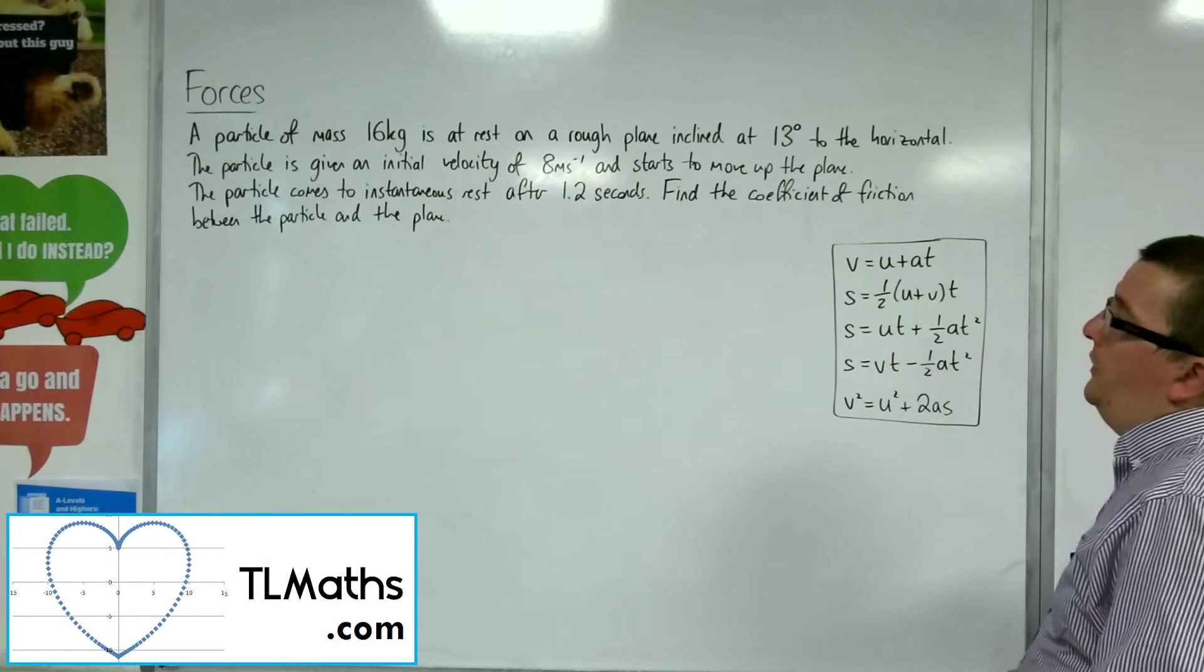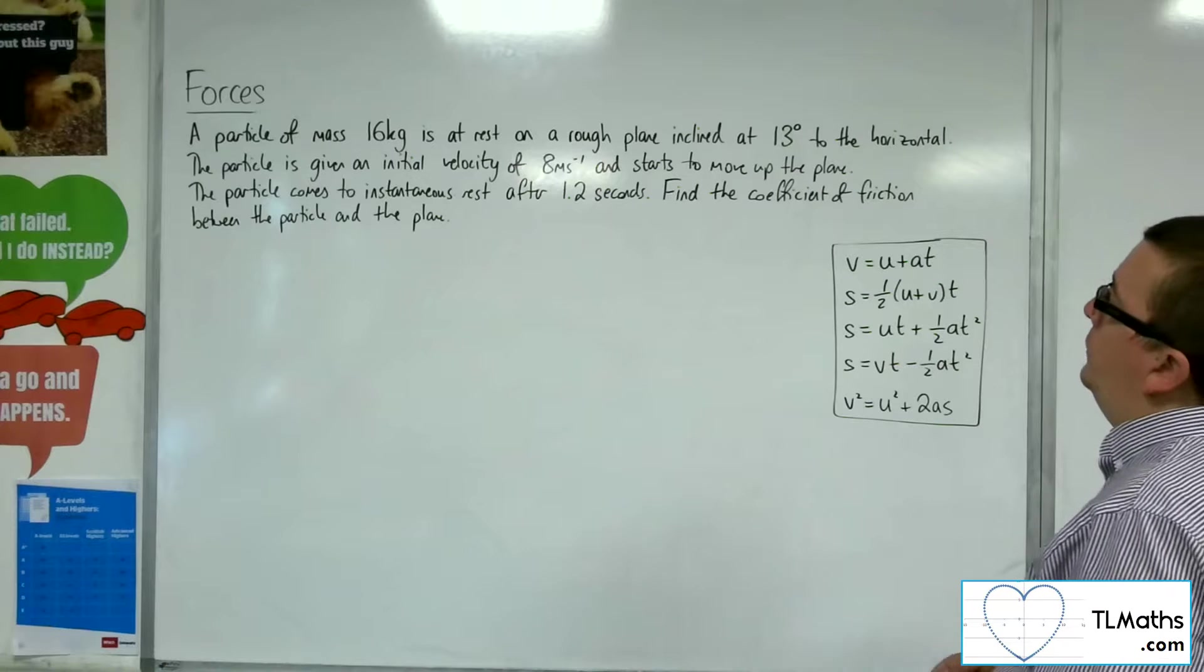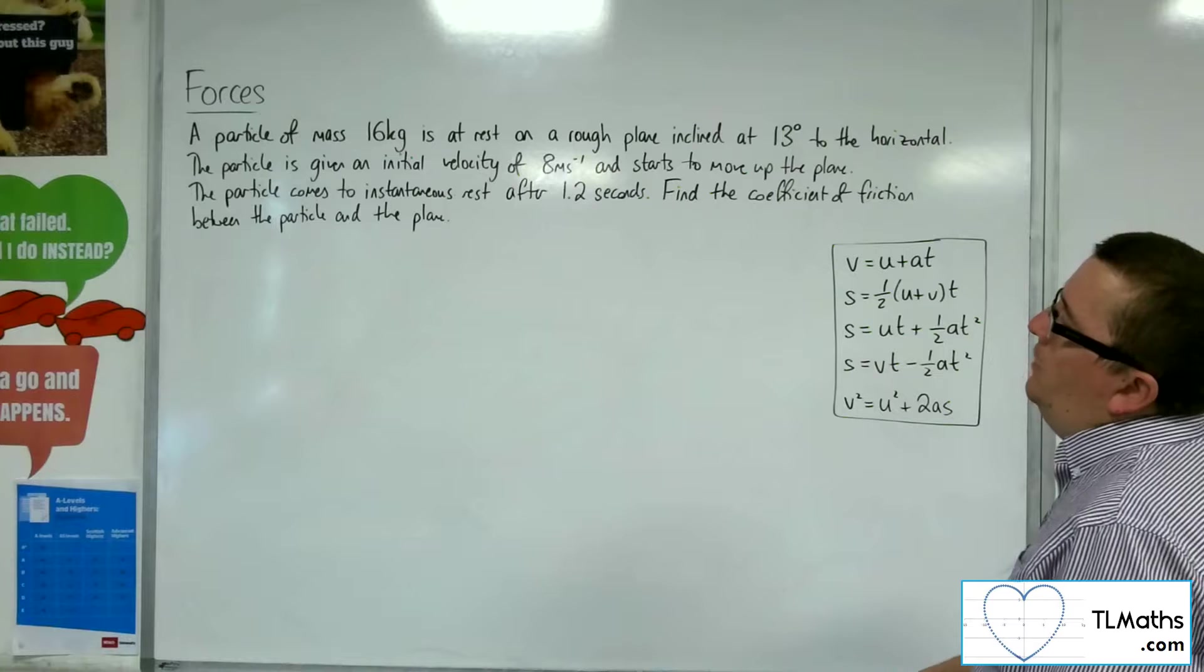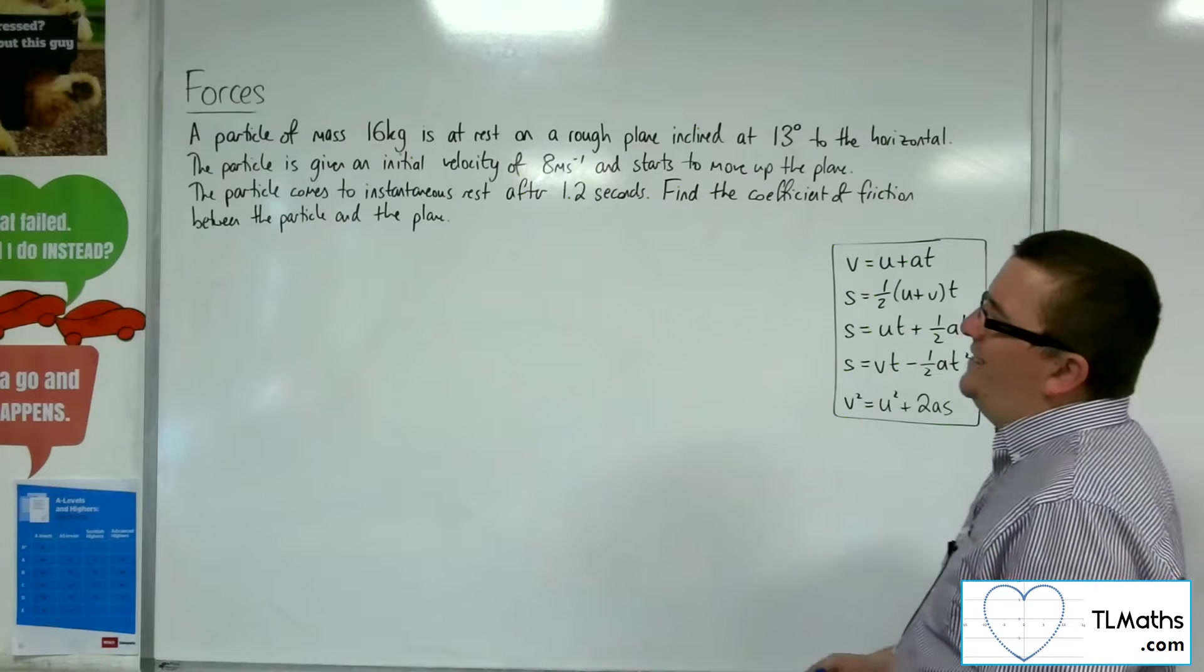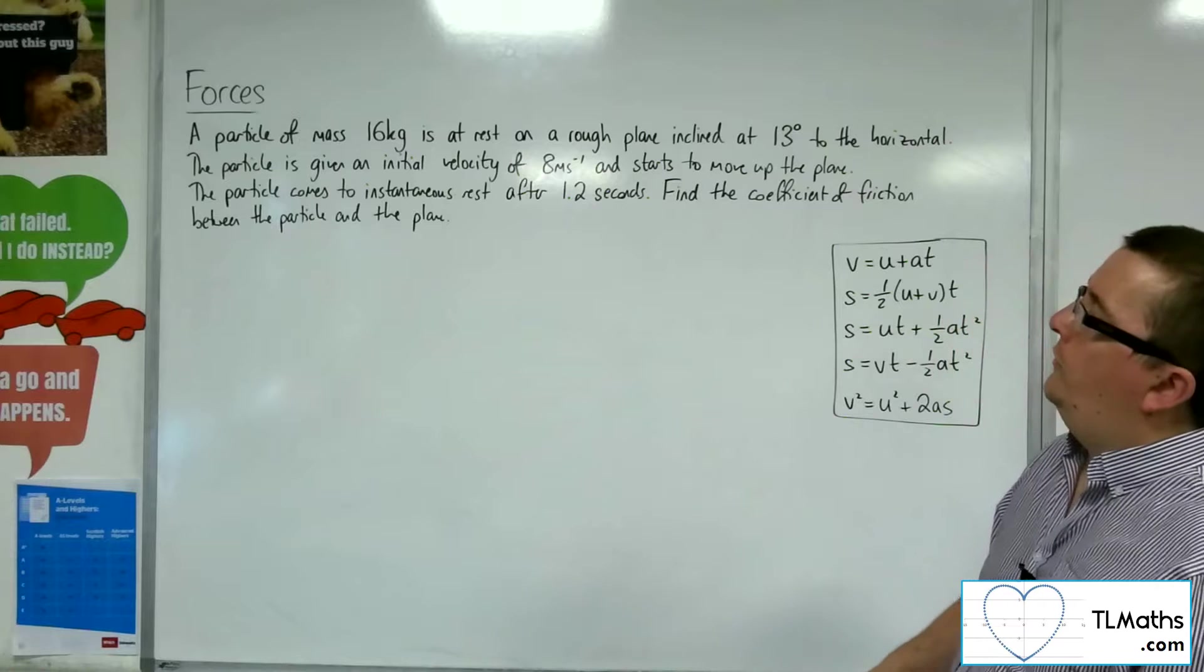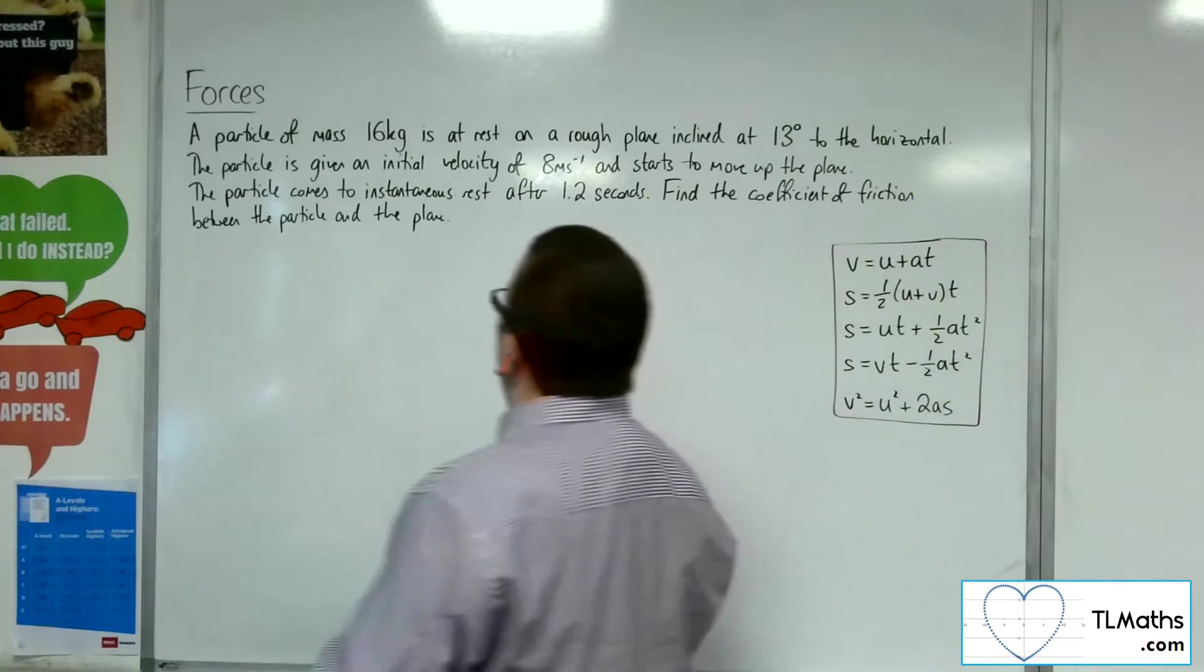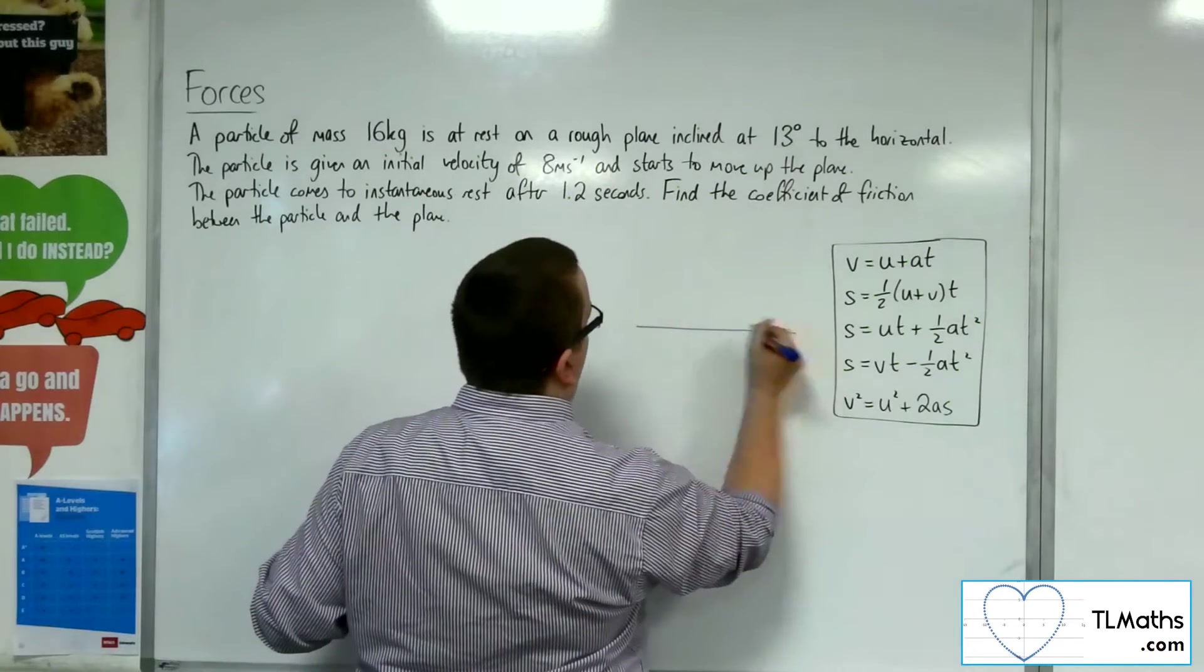In this problem we've got a particle of mass 16 kilos at rest on a rough plane inclined at 13 degrees to the horizontal. The particle is given an initial velocity of 8 meters per second and starts to move up the plane. The particle comes to instantaneous rest after 1.2 seconds. Find the coefficient of friction between the particle and the plane. Let's draw a diagram so we can see what's going on.